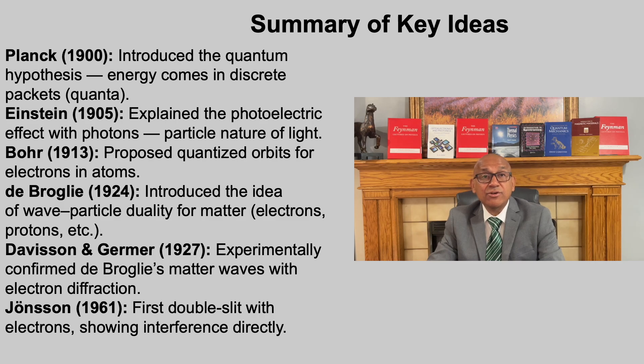In 1927, Clinton Davisson and Lester Germer confirmed this by observing electron diffraction, direct proof that matter behaves like waves. And in 1961, Klaus Jönsson performed a double-slit experiment with electrons, once thought impossible. His doctoral work revealed clear electron interference patterns, a powerful demonstration of wave-particle duality. Decades later, in 2002, physicists voted this experiment the most beautiful experiment in physics. Together, these discoveries forced physics to move beyond classical certainty into a new world defined by quantum probability.